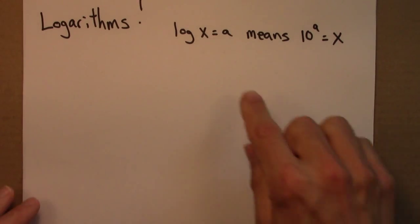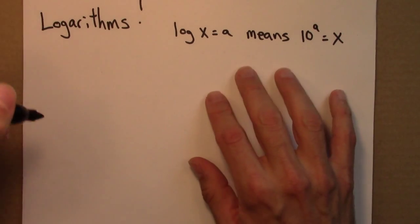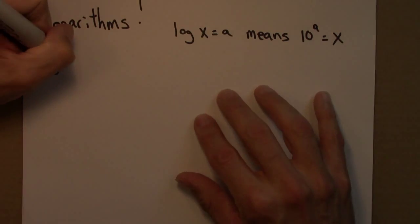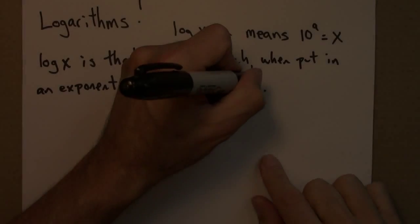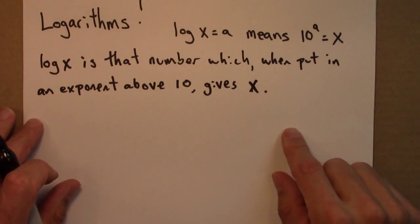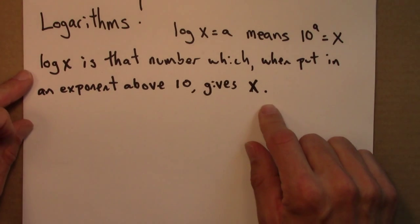There's another way to say this. You can basically write this out in a sentence. So log x is the number which, if you put it in an exponent above 10, gives x.